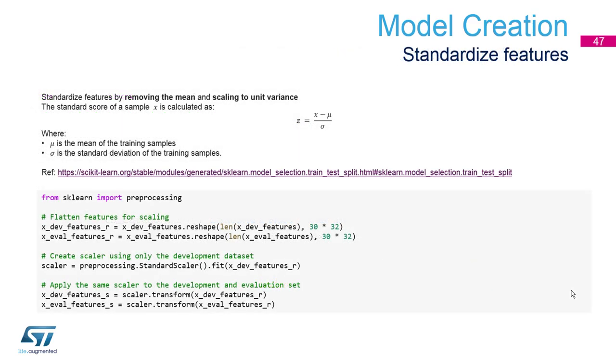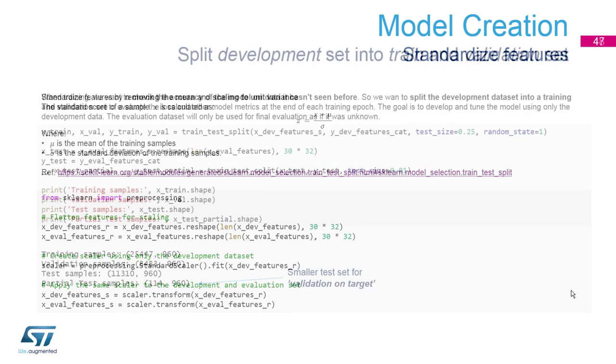Before we feed our spectrograms, the input features to the neural network, we want to standardize them, to normalize them using the standard scaler from sklearn. So this will have a zero mean and a unit variance of one, so all the values will be between minus one and one before going into the neural network.